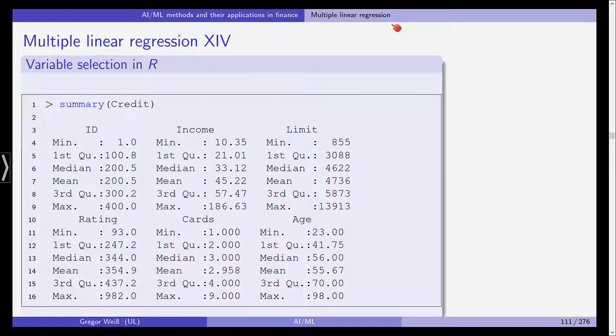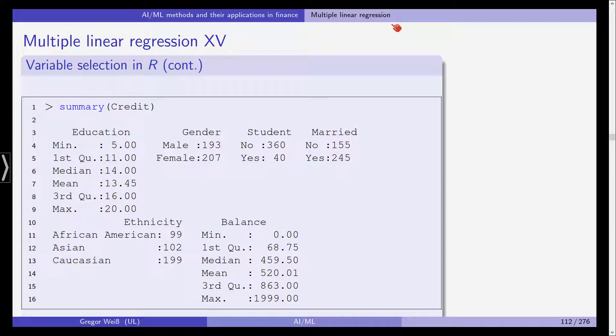So let's look at this in R. We are using the credit card data. And you see the summary statistics for those different variables. You see the ID, which is just the number of the observation going from 1 to 400. We have the income, the credit card limit, the rating, the number of cards, the age of the customer, education, gender, student, married, ethnicity, and balance, which is our response variable in all these regressions.